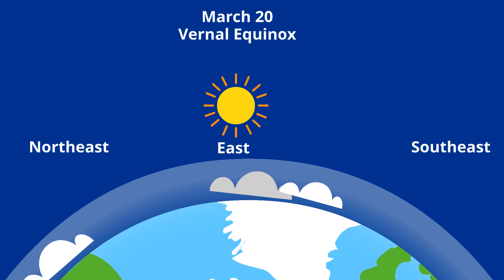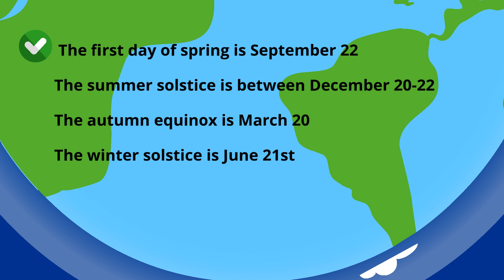In the southern hemisphere, the first day of spring is September 22nd. The summer solstice is between December 20th and 22nd. The autumn equinox is March 20th, and the winter solstice is June 21st. If you'd like to know more about the path of the sun, this playlist will help.